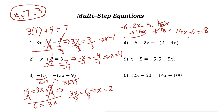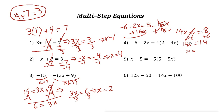The next step is easy. We have 14x minus 6 equals 8. The inverse operation of subtraction is addition, so add 6 to both sides. 14x — these two cancel out — equals 14. Now divide both sides by 14, and x is 1.